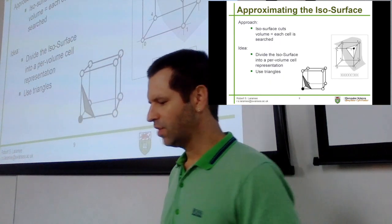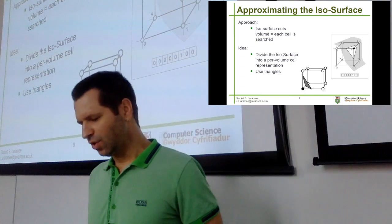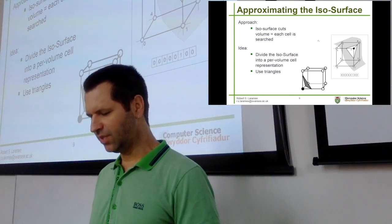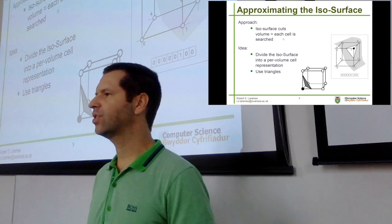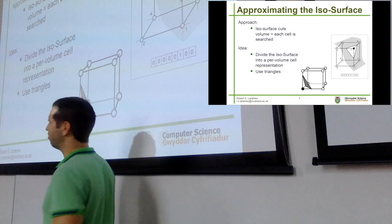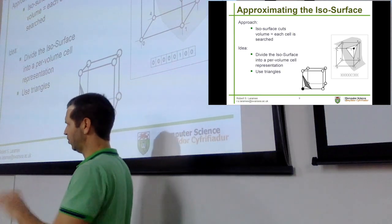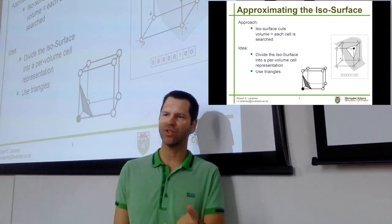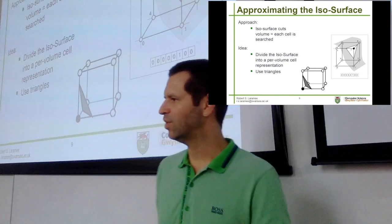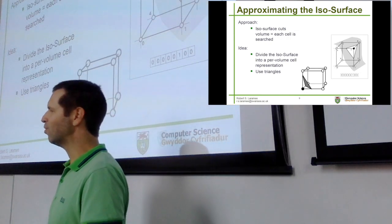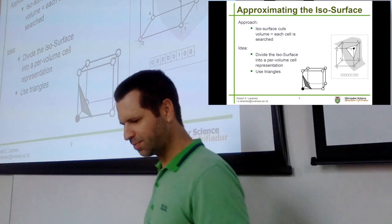Approximating an isosurface, as opposed to an isocontour from last time — the idea is to examine the volume data on a cell-by-cell basis. That means the isosurface cuts the volume and each cell is searched. Remember from the very first lecture when I said that data visualization — everything surrounding data — is essentially a search process. So this is a search process. Each cell is searched.